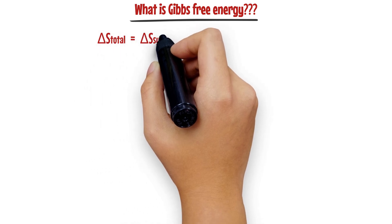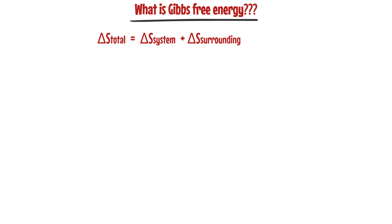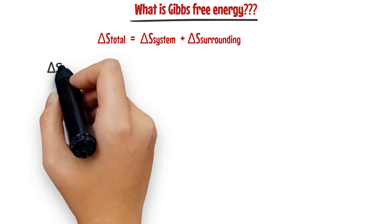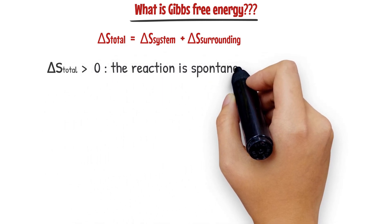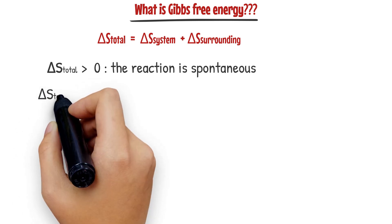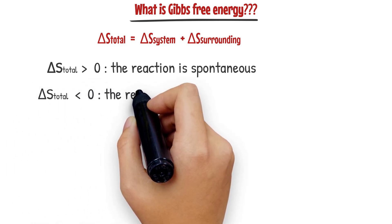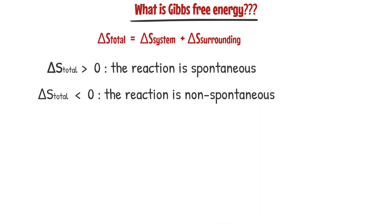The total entropy change is the sum of the entropy change of the surroundings and the entropy change of the system. If the total entropy change is positive, the reaction is spontaneous. But if the total entropy change is negative, the reaction is non-spontaneous. This is one way you can know if a reaction is spontaneous or non-spontaneous.